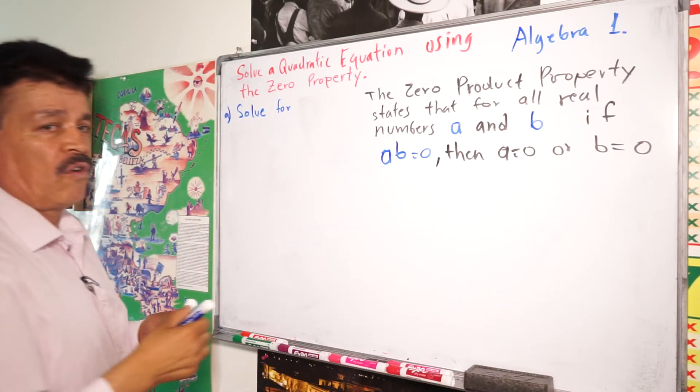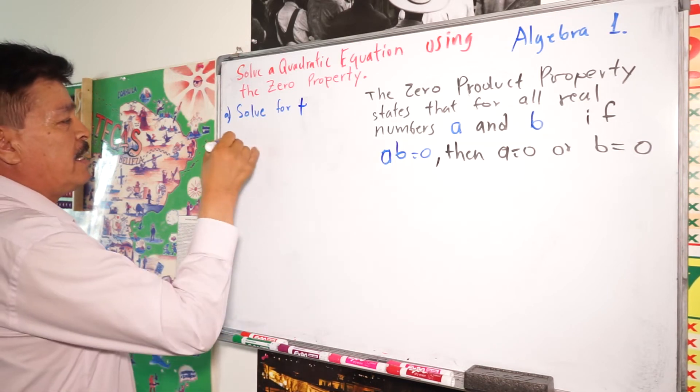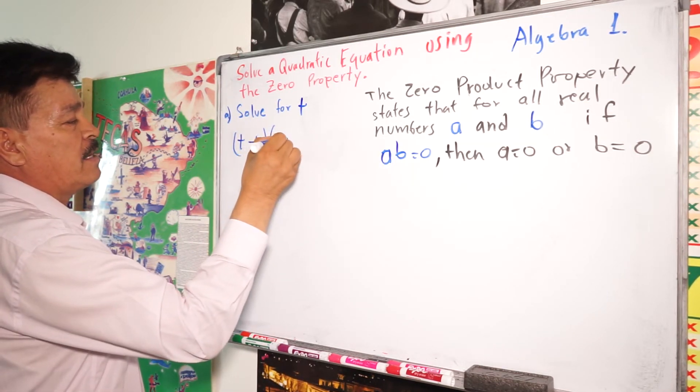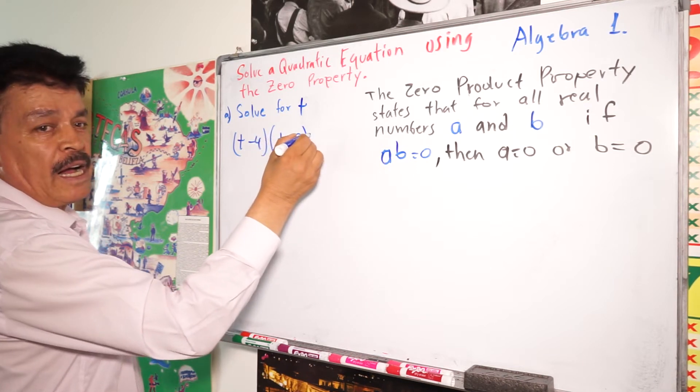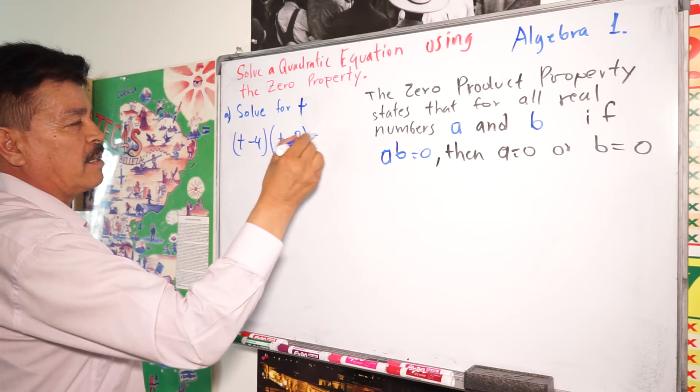In this case, I solve for t. Let's write (t-4)(t-8) = 0. See?